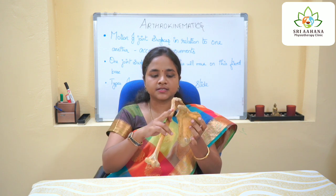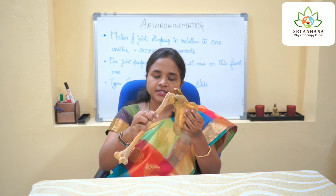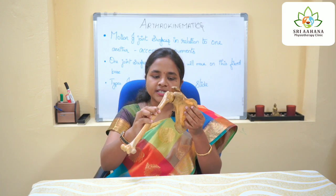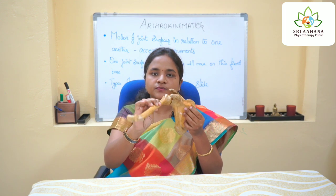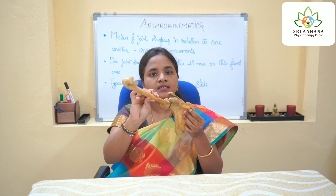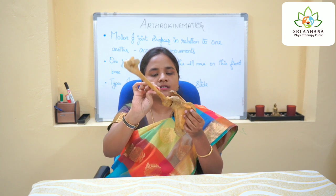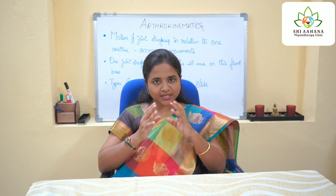This is the concave surface and this is the convex surface. When this convex surface moves on the stable concave surface, the shaft moves in the opposite direction to that of the gliding bone. The bone gliding occurs in the opposite direction to that of the bone movement.